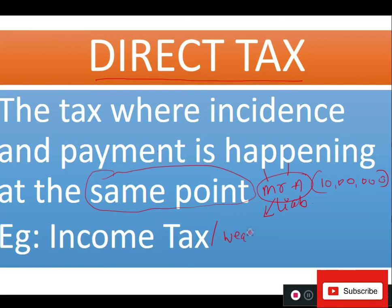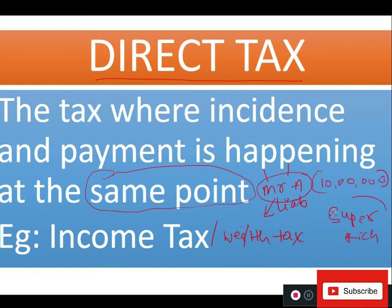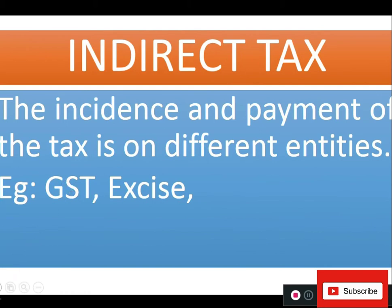An example of direct tax is income tax. Previously we also paid wealth tax, but it has recently been abolished — you may find it in old textbooks but it is no longer applicable. Wealth tax was meant for people considered to be super rich, but it no longer exists, so there is no need to focus on it.